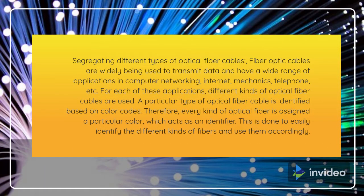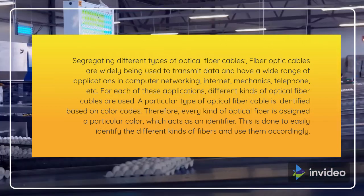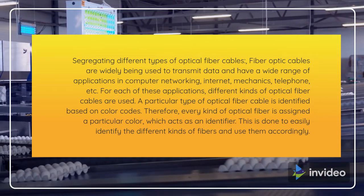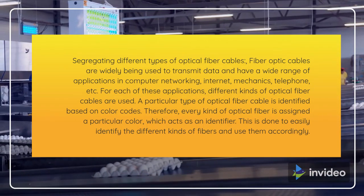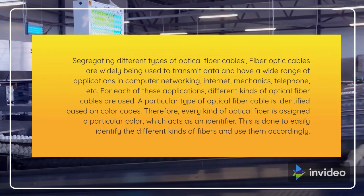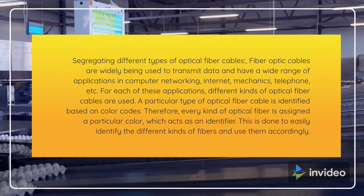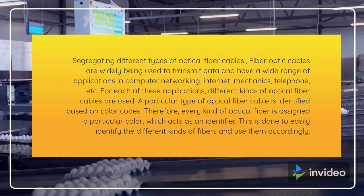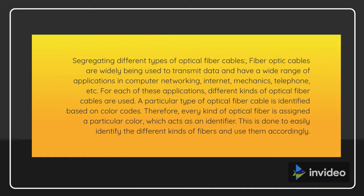Segregating different types of optical fiber cables: fiber optic cables are widely used to transmit data and have a wide range of applications in computer networking, internet, mechanics, telephone, etc. For each of these applications, different kinds of optical fiber cables are used. A particular type of optical fiber cable is identified based on color codes. Therefore, every kind of optical fiber is assigned a particular color, which acts as an identifier. This is done to easily identify the different kinds of fibers and use them accordingly.